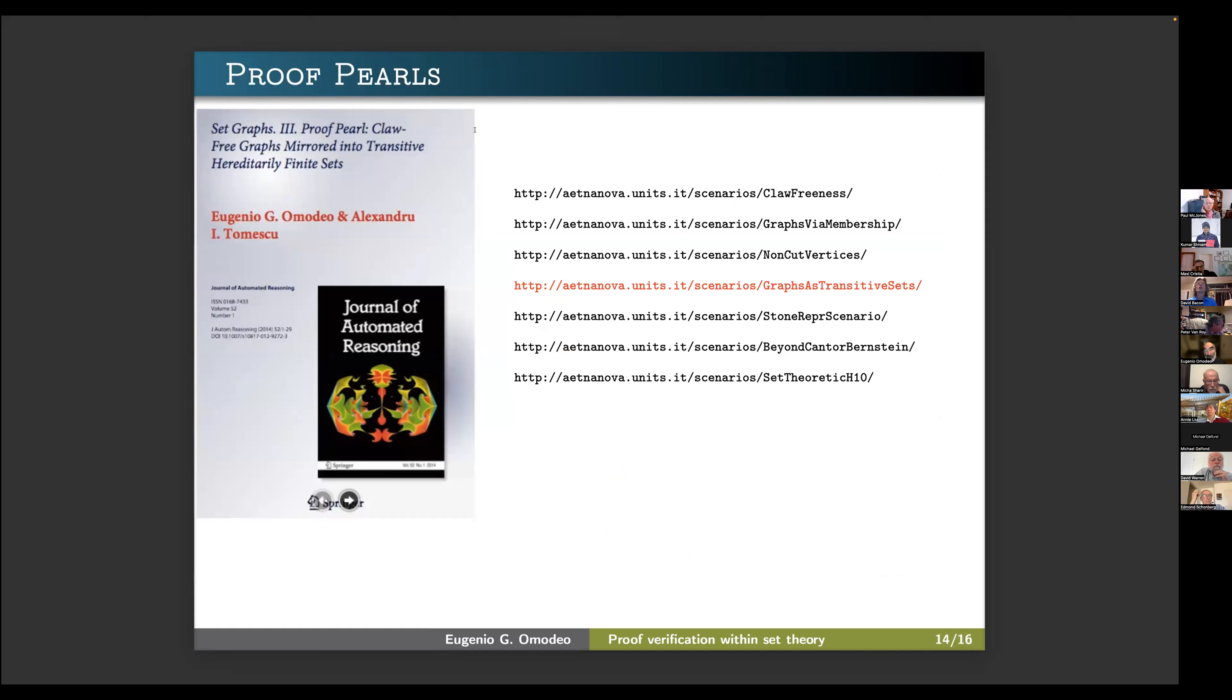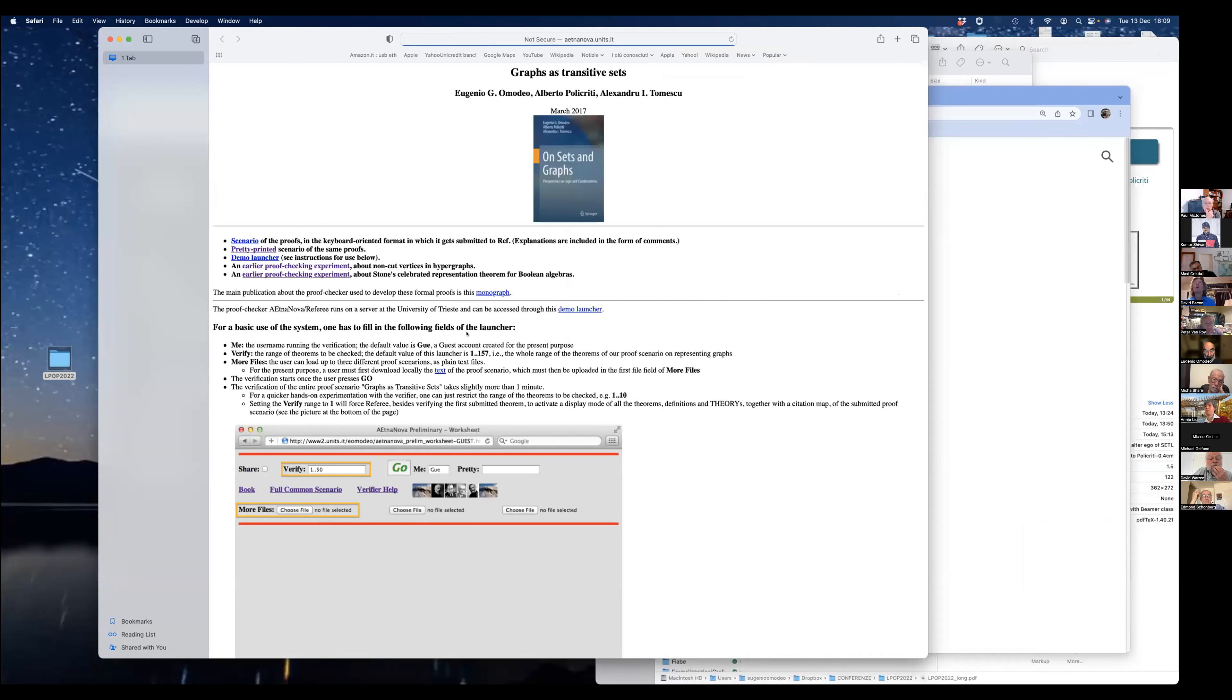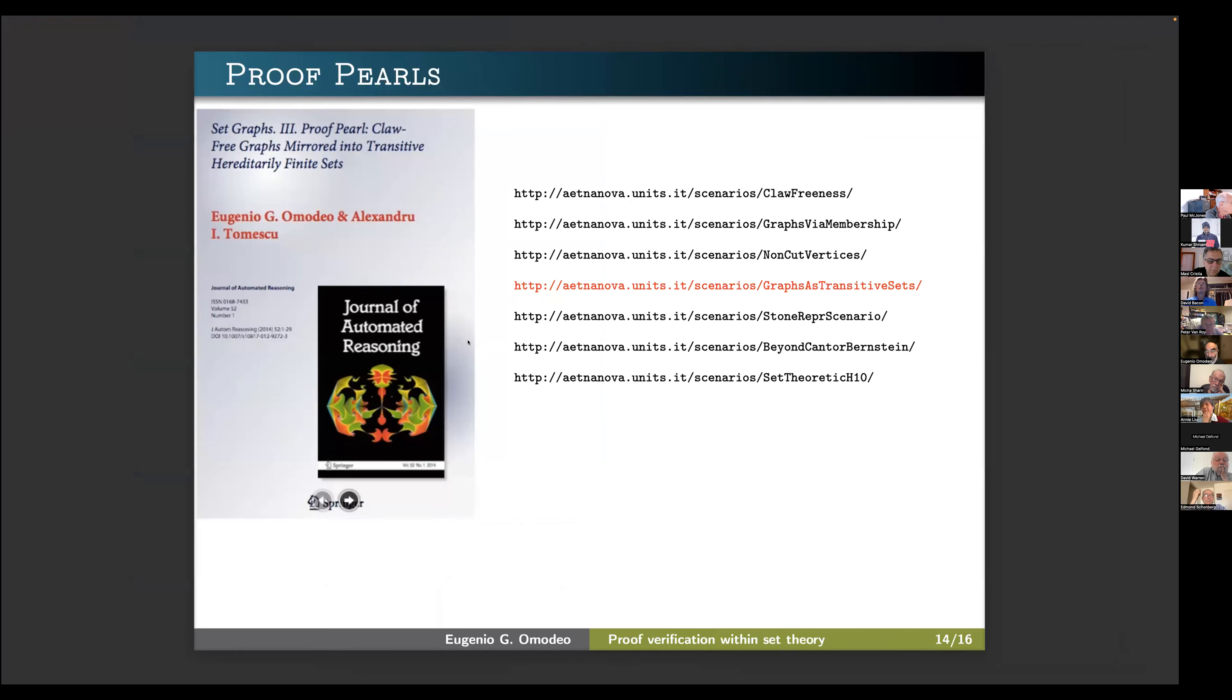We have many proof pairs, that is to say, proofs which have been entirely developed in Etnanova. All these links are good links. I've had these pages reinstalled by the technician of my department in the last few days. And so you can enter here and have an idea of what you can do. Here you see, for instance, a scenario in keyboard format, in printed format. You can launch it and so on and so forth. But launching today is impossible because Aetnanova is experiencing in these days some difficulty just because it had been disinstalled and they have to install it again.